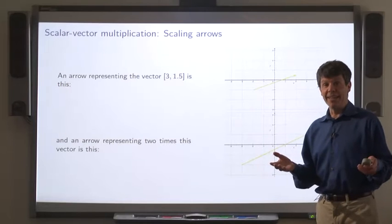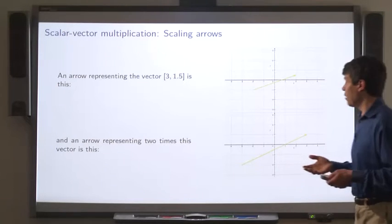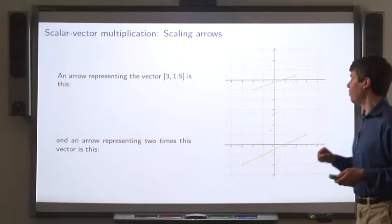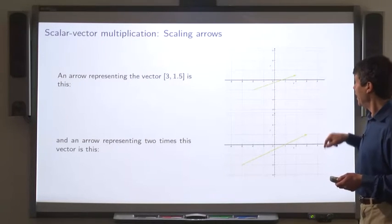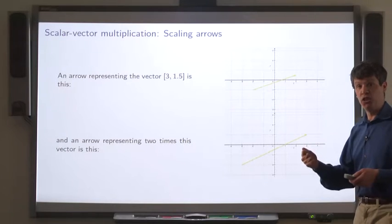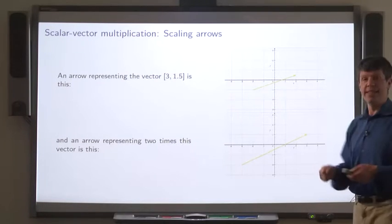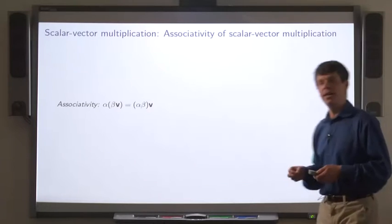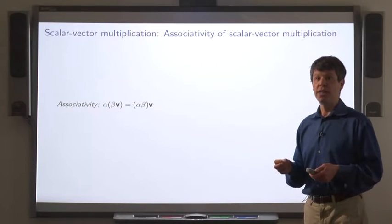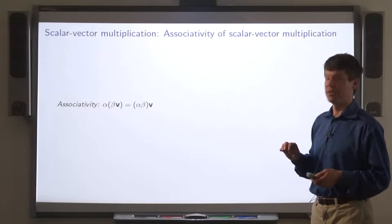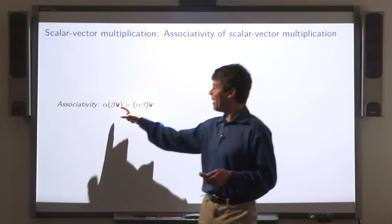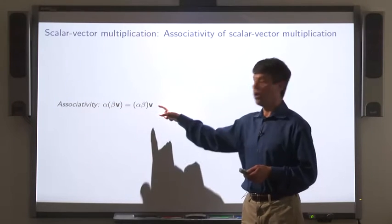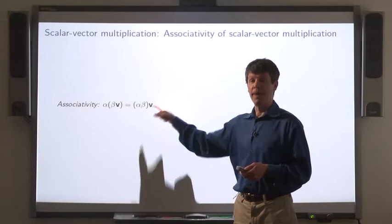Now, let's interpret scaling as an operation on arrows. So here's an arrow representing the vector 3, 1, 5, and when we scale it by 2, we get a vector that's in the same direction but is twice as long. Scalar-vector multiplication satisfies an algebraic property that multiplying a vector by beta and then multiplying the result by alpha is the same as multiplying the original vector by alpha times beta.